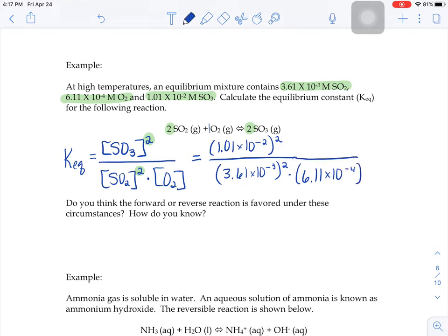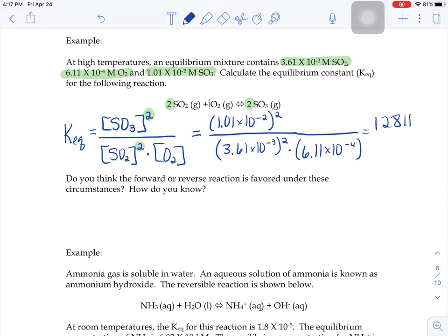Throw that in your calculator. Your calculator is going to spit out 12,811, but we only get 3 sig figs when you look at those 3 molarities that you were provided, so we're going to round that to 12,800.